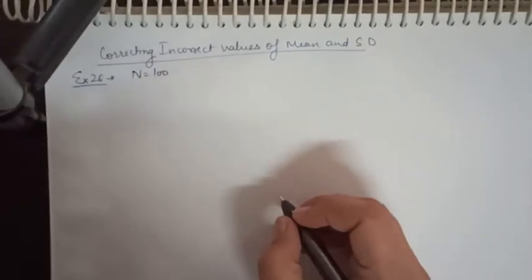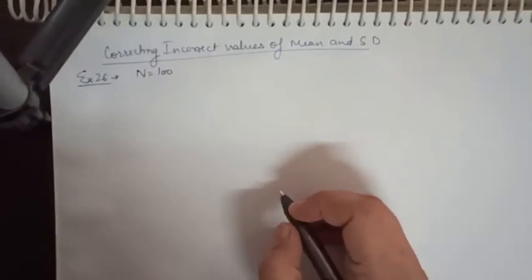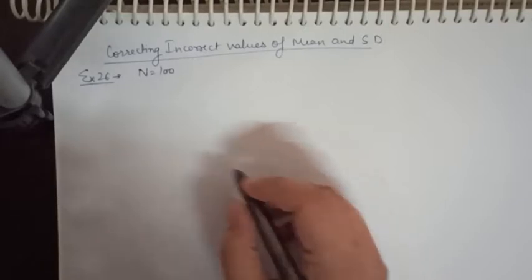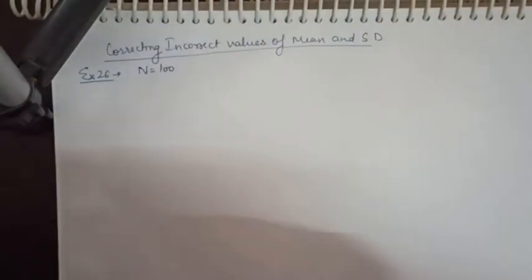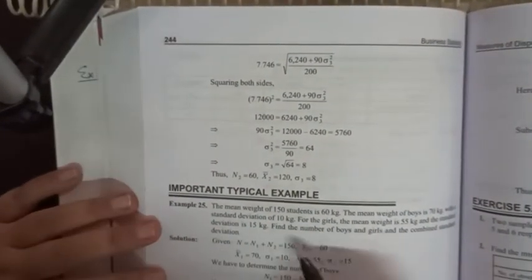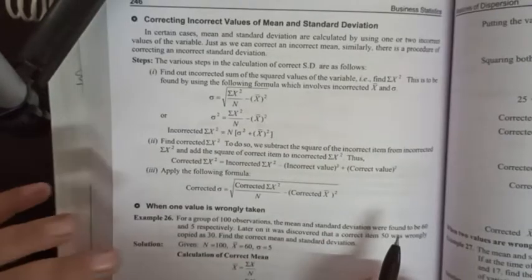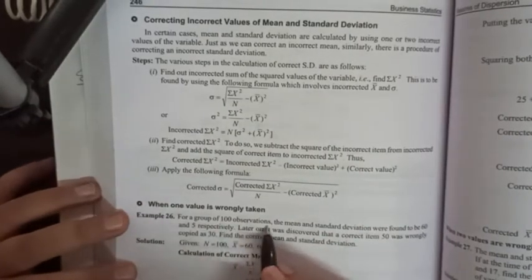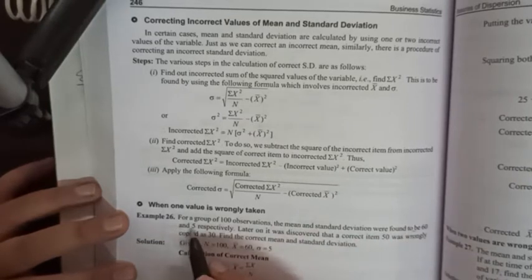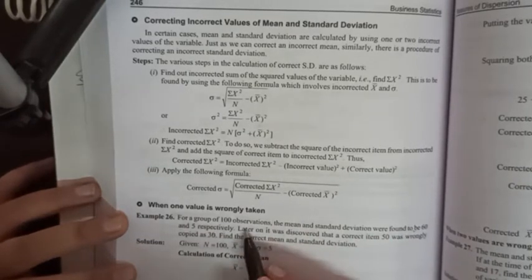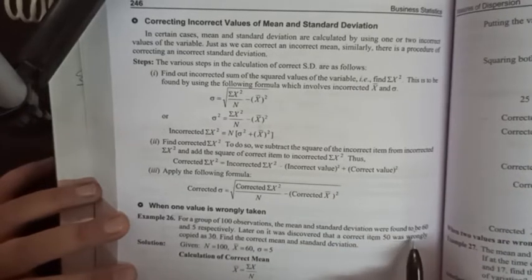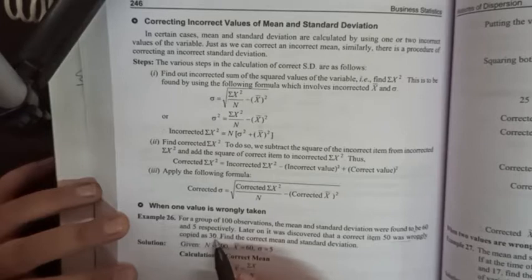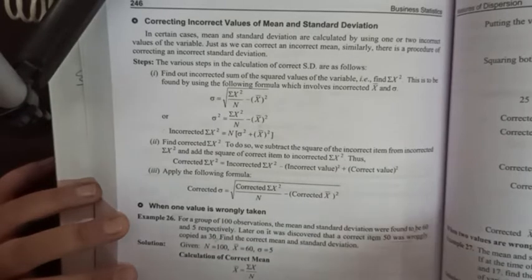Good morning students, today we will see correcting incorrect values of mean and standard deviation. I have made example number 26. For a group of 100 observations, the mean and standard deviation were found to be 60 and 5. Later on, it was discovered that the correct item was 50, but it was wrongly copied as 30. Find the correct mean and standard deviation.